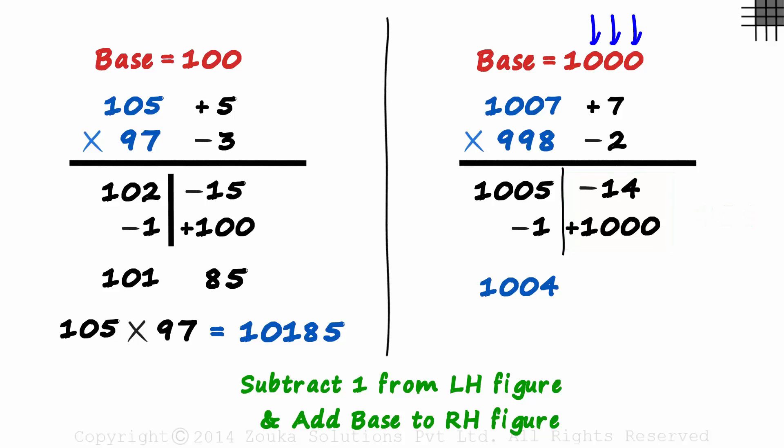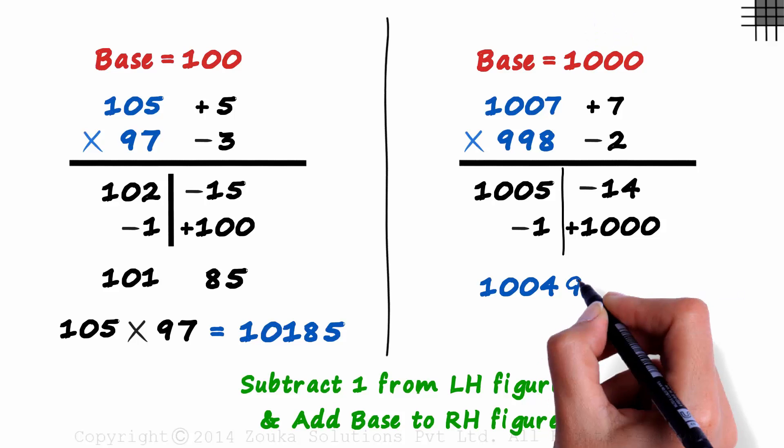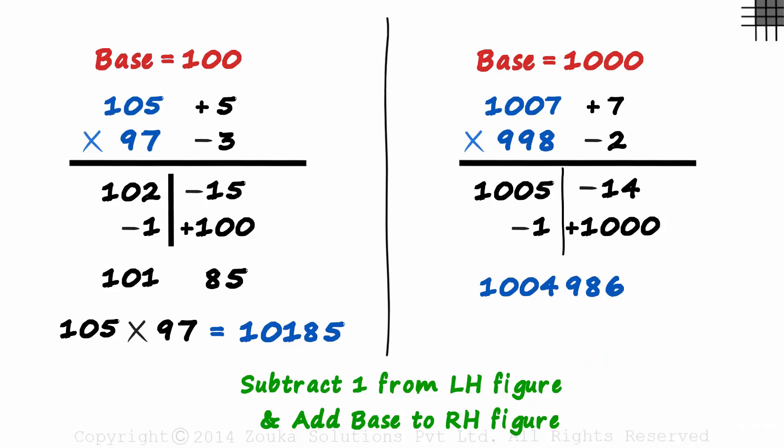As there are 3 zeros in the base, we can have 3 digits on the right. So we can write a 986 here. That's the correct answer. 1007 times 998 is equal to 1 million 4 thousand 986.